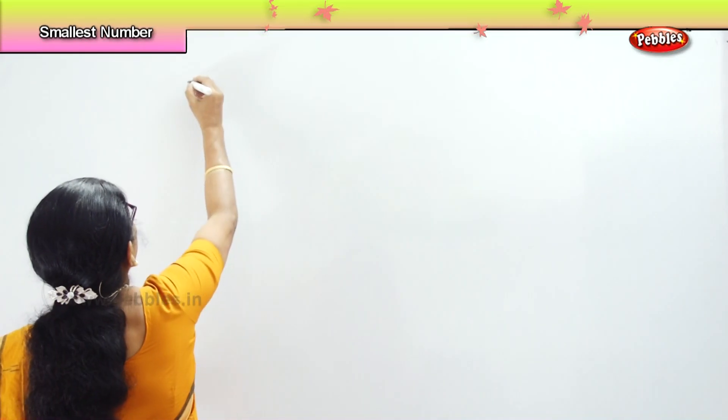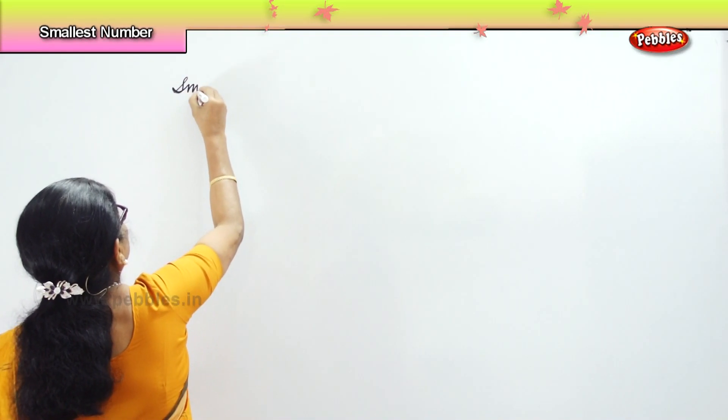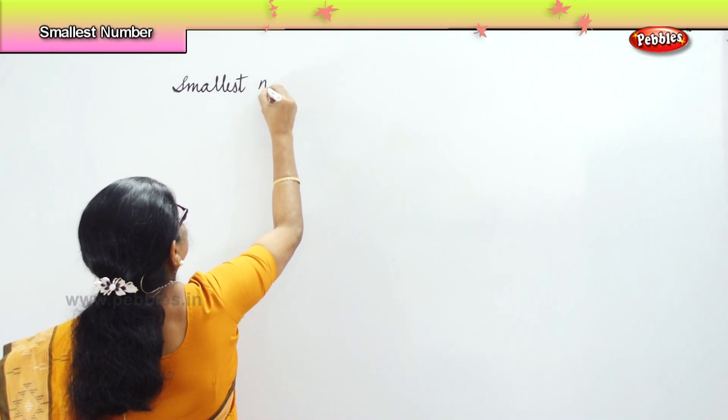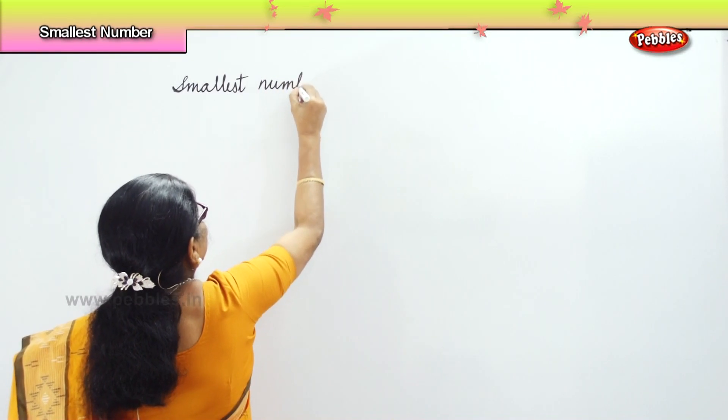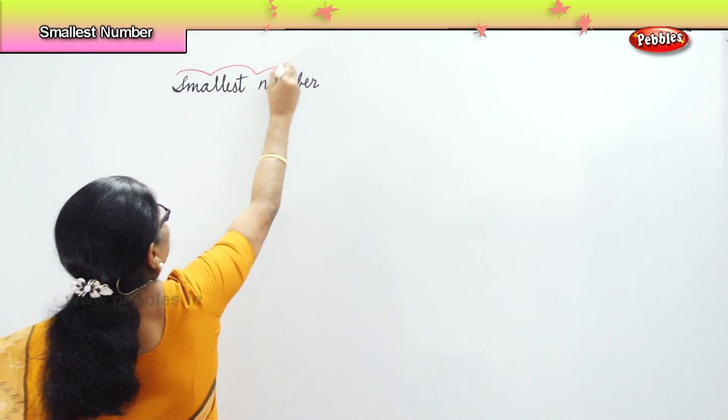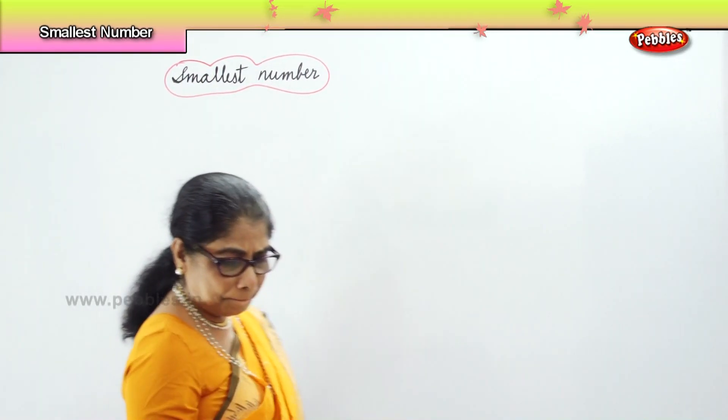Now we are going to look at, among the numbers given, we are going to identify the smallest number. So that's what we are going to do — identify the smallest number in each row. We are given 2-3 numbers. How do we select and identify the smallest number?